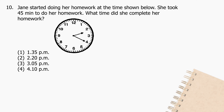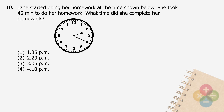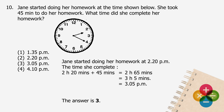Question 10: Jane started doing her homework at 2:20 pm. She took 45 minutes to do her homework. What time did she complete her homework? Adding 2 hours 20 minutes to 45 minutes gives 2 hours 65 minutes, which is equal to 3 hours 5 minutes, which is equal to 3:05 pm. The answer is 3.